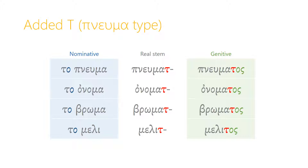Similarly, to-onoma — we add a tau onto onoma to get onomat, and so the genitive is onomatos. Broma becomes bromat, and so the genitive is bromatos. And to-meli, honey — you add a tau to the nominative form to make the real stem, and so the genitive form becomes melitos.